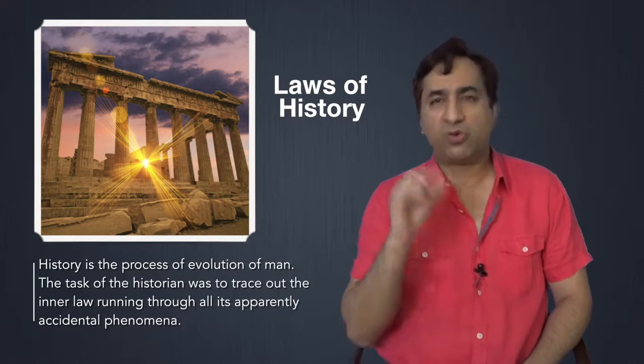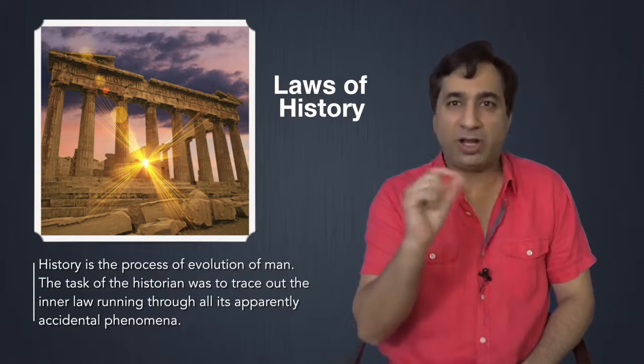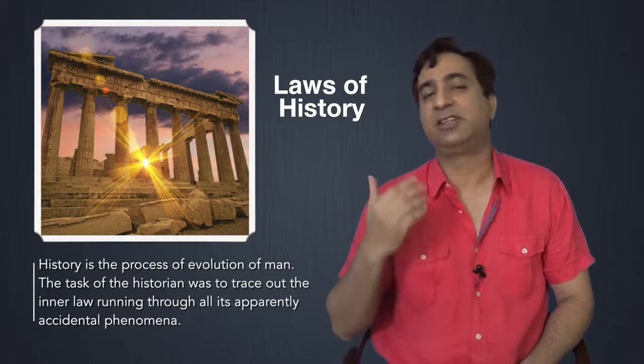The task of the historian was to trace out the inner law running through all its apparently accidental phenomena. So when you look at history, you'll see a lot of different things happening. People are killing and dying and wars are going on, et cetera, et cetera. And when you look at these things at the beginning, they seem absolutely chaotic. They seem like there is no pattern. But Hegel has tried to show you that there is a pattern in history. History develops according to its own laws of evolution. And that is Hegel's greatest achievement to posit the idea that human history is not just random, but is itself in the process of evolution.